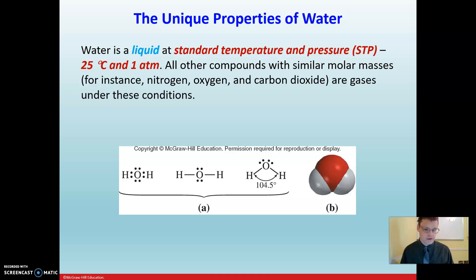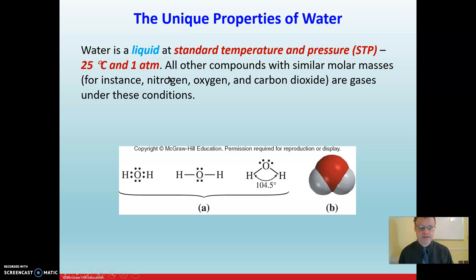What's interesting about water is that it's a liquid at standard temperature and pressure — that's 25 degrees Celsius as the standard temperature and one atmosphere as the standard pressure. Other compounds that have the same molecular weight or molar mass as water are gases under these conditions. So imagine if all the water on Earth was a gas — that'd be a very different planet. And there are some very important molecular reasons for that.